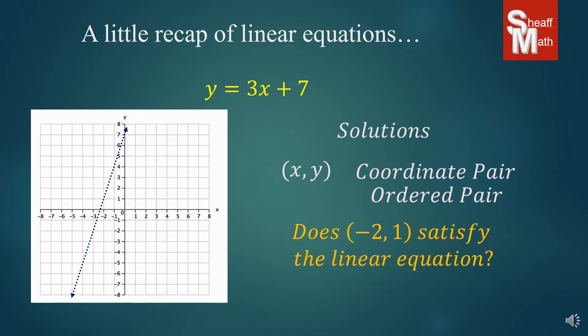The question that you will be asked is, does (-2, 1) satisfy the linear equation? Now, the point could be anything here. So we have to see if (-2, 1) is actually on that line. And so, (-2, 1) is right there. And it definitely is. So this is a solution. So it does satisfy the linear equation. The answer is yes.